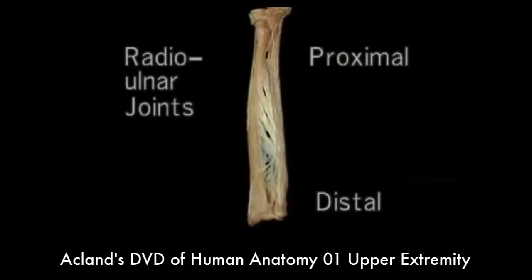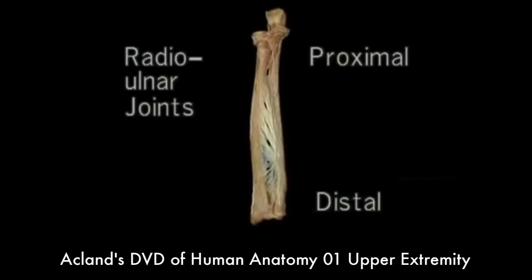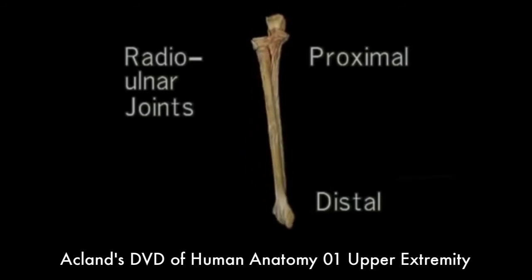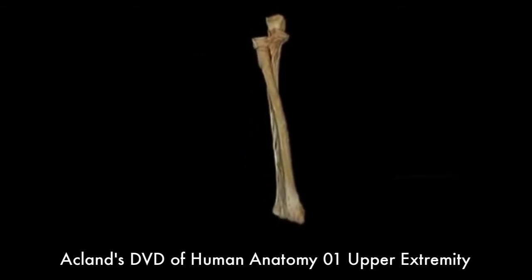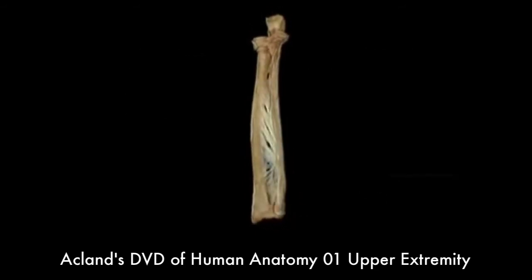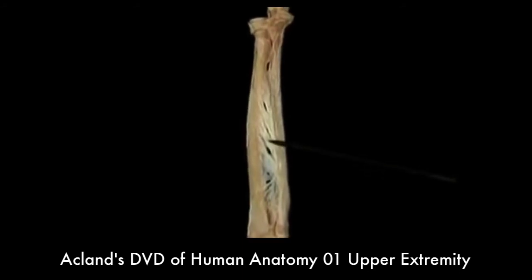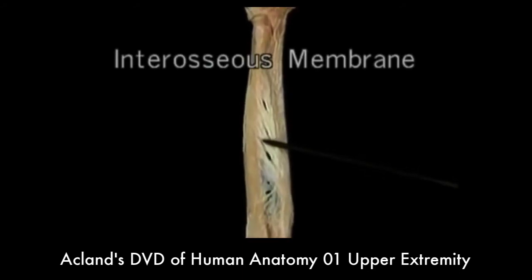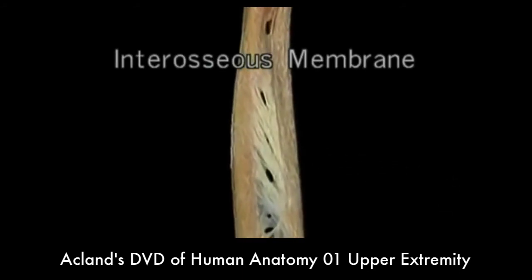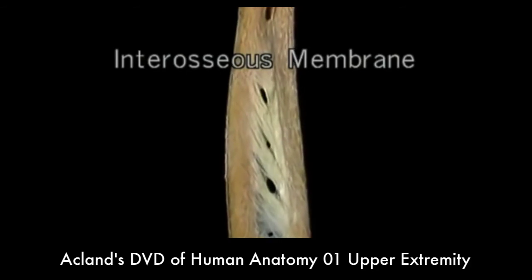Forearm rotation happens simultaneously at both these joints. The two bones are also held together along most of their length by the strong but flexible interosseous membrane, which prevents the two bones moving lengthwise relative to each other.